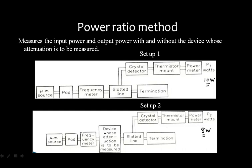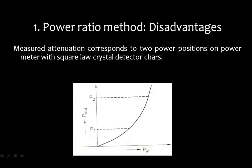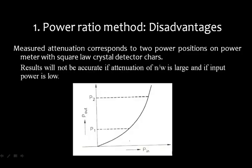Once you connect that device, you get its attenuation. So the power ratio method gives you an exact idea of attenuation. However, a disadvantage is that you are using a crystal detector, so the measured attenuation corresponds to two power positions on the power meter with a square-law crystal detector, and results will not be accurate if the attenuation of the network is large and the input power is low.